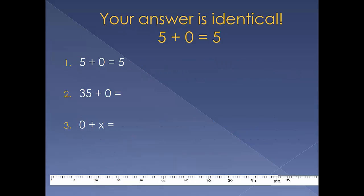The answer would be identical. Five plus the identity number equals five. Thirty-five plus zero. Zero plus X. The answer is the same. Zero plus X is X.